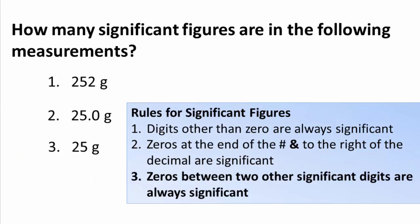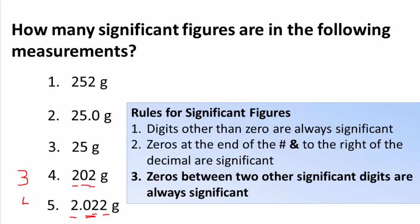Next rule: zeros between two other significant figures are always significant. For the number 202, we know the first 2 is significant because it's a non-zero, the last 2 is significant because it's non-zero, and the 0 becomes significant because it is between two significant figures. So 202 has three significant figures. For another example, 2.022 — the three 2s are all significant, and the zero between them is also significant, giving us four significant figures.